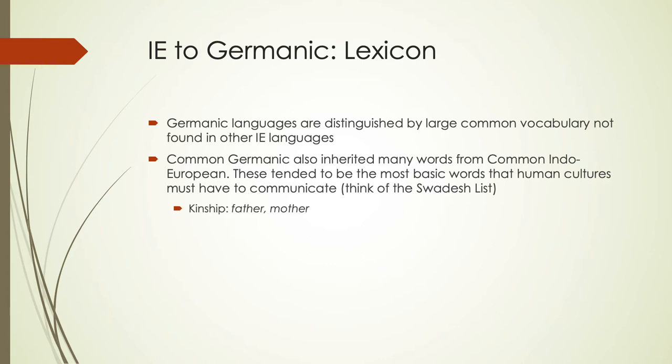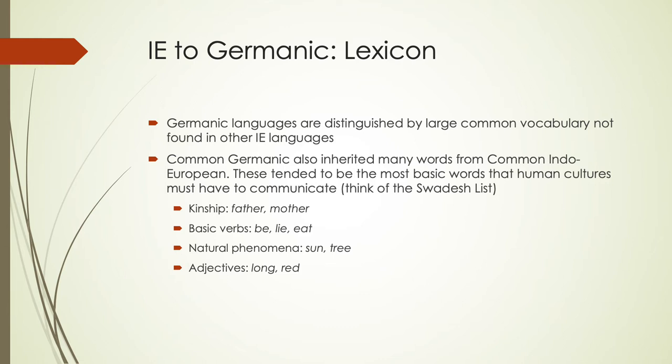The inherited Proto-Indo-European vocabulary includes things like common adjectives such as long or the color red, and body parts like foot or head. There's a lot of lexicon unique to Germanic languages, but also a lot of evidence of its relationship to other Indo-European languages through these very basic words.